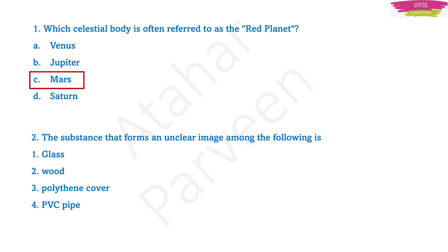This is the most expected question this time. Question number two: the substance that forms an unclear image among the following is — read the options carefully: glass, wood, polythene cover, PVC pipe. PVC pipe means polyvinyl chloride pipe — basically a plastic pipe. Glass gives a clear image. Wood gives no image at all. In PVC pipe also you will not get any image. So the correct answer is polythene cover, because you will get some sort of image but it will not be a clear image.